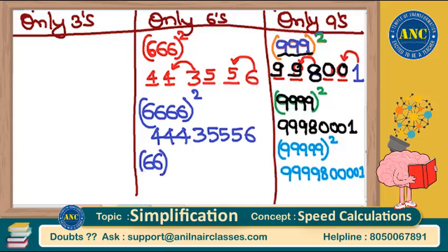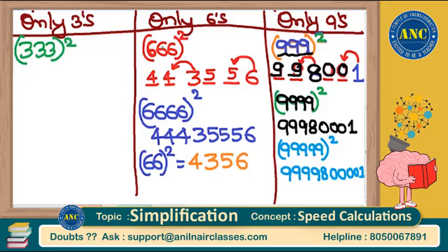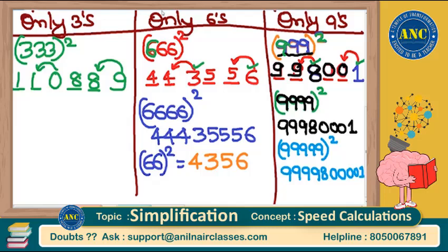For 66 squared: one four, followed by 3, one five, followed by 6 — answer is 4356. This can also be found using (a+b)² or the squares of numbers from 36 to 75 method — same answer, showing the beauty of learning through concepts. For 333 squared: 3² = 09 in two-digit format. Three threes → two dashes: one less than 9 = 8, one more than 0 = 1. Answer: 110889.